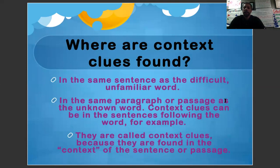Where are context clues found? Usually in the same sentence as the difficult or unfamiliar word. Oftentimes, if not in a sentence, they'll be in the same paragraph or passage as the unknown word. Context clues can also be in the sentences following a word. They're called context clues because they are found in the context of the sentence or passage.